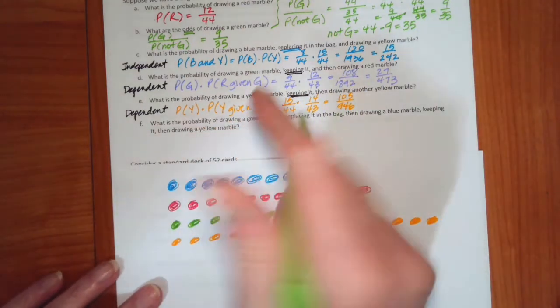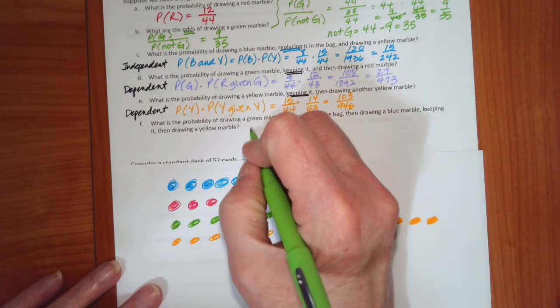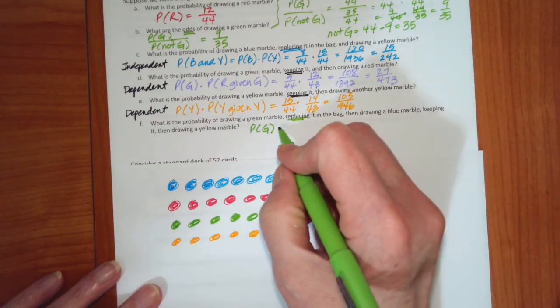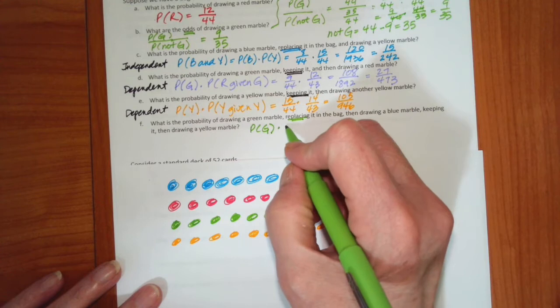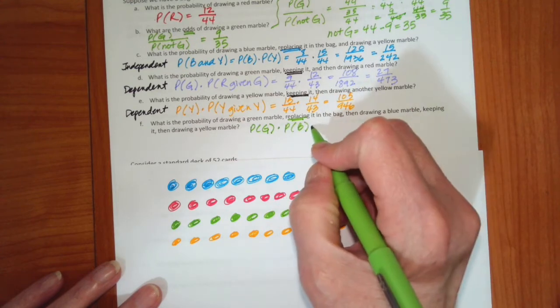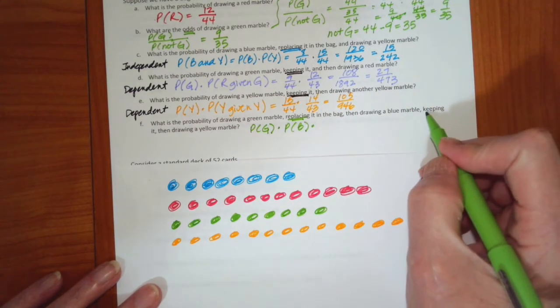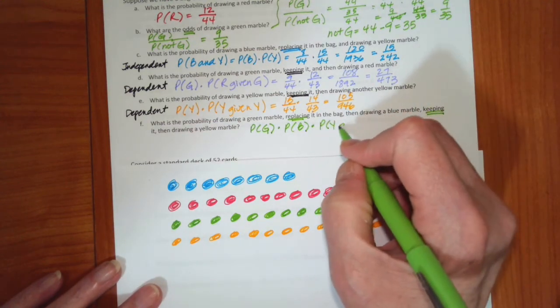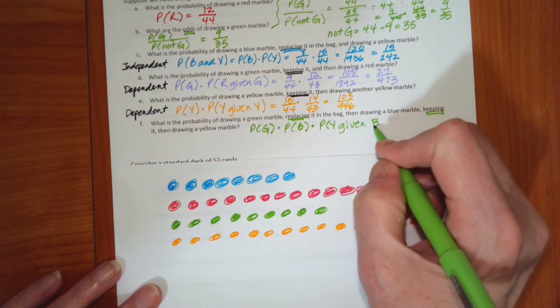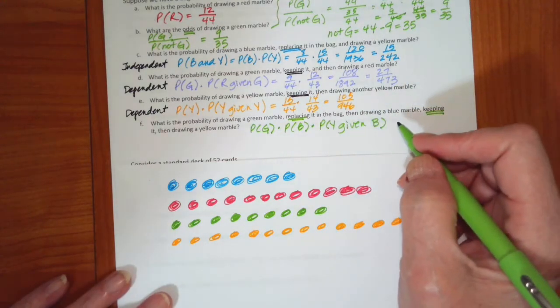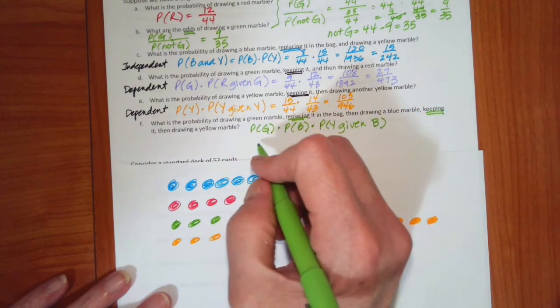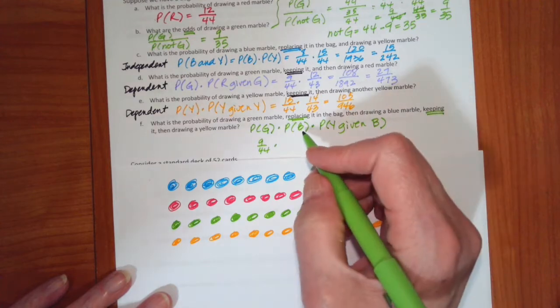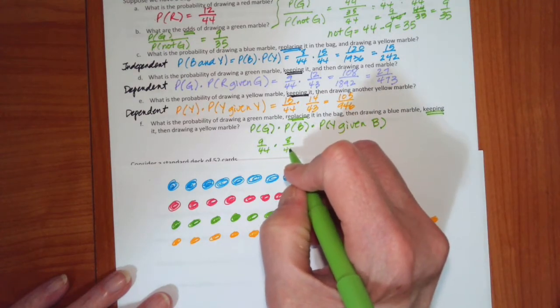So the probability of drawing a green. So that's the probability of a green. We replaced it so that's independent. Then we need to find the probability of a blue. And then we kept it, so we're going to find now the probability of a yellow given that one of the blues is gone. Okay, so the probability of a green we know is 9 out of 44. The probability of a blue is 8 out of 44.